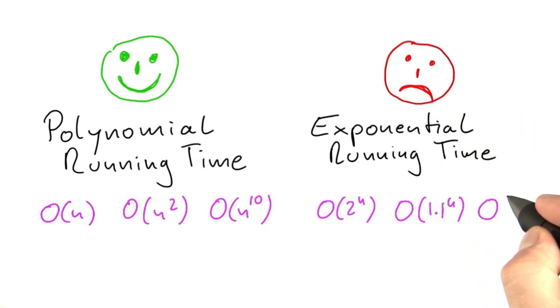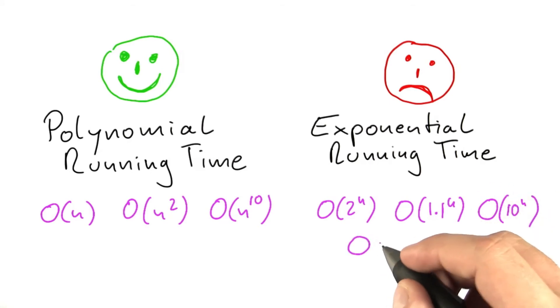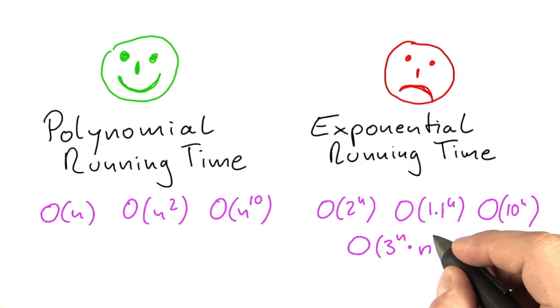And also something really bad such as O of 10 to the power of n, that would also be an exponential running time. What about an algorithm such as O of 3 to the power of n times n to the power of 2?